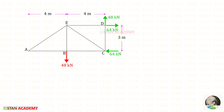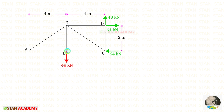Now let us find the member forces at joint A. Applying sigma V = 0, the member force AE is zero. Applying sigma H = 0, the member force AB is also zero. If you know the shortcuts for finding zero-force members you can easily find them — I have already made a video regarding this, you can see the link in the description. At joint B, applying sigma H = 0, since AB is zero, the member force BC is also zero.